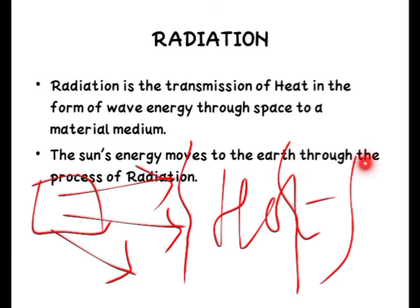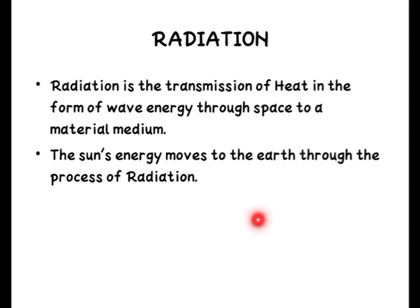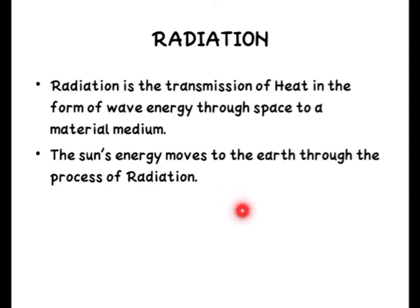The sun's energy moves towards the earth through the process of radiation. For the sun's energy to reach our earth, we do not have any solid medium in between. The heat comes through air only, and this process is known as radiation. The sun's energy always moves to the earth through radiation. During the day, when the sun is shining, the places on the earth become hot because of this process of transfer of heat — that is, radiation.